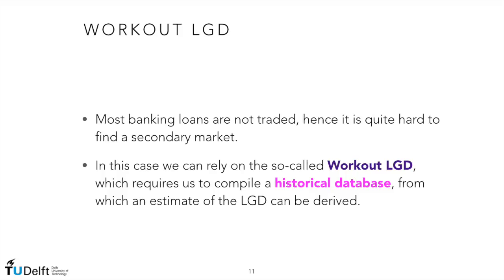Most banking loans are not traded, so it is quite hard to find a secondary market. In this case, we can rely on the so-called Workout LGD, which requires us to compile a historical database from which an estimate of LGD can be derived. This database contains information about past defaulted exposures, recovered amounts, recovery lags, procedures, and so on. Data can then be segmented by type of exposure, type of counterparty, etc. More details about actual computations can be found on the course platform.